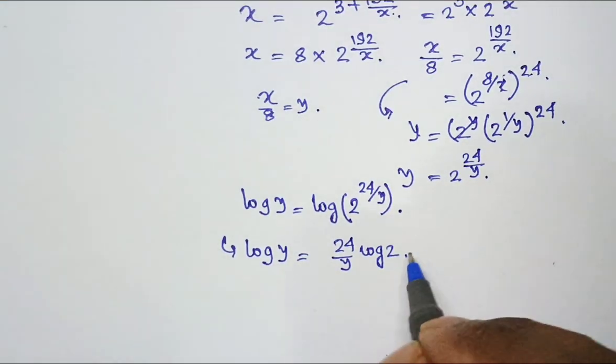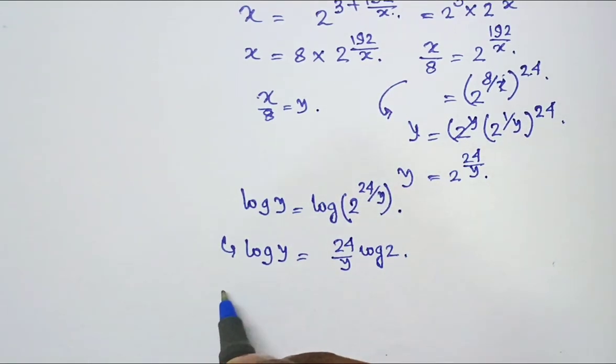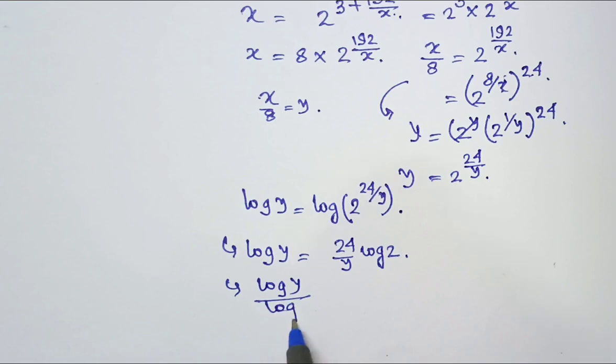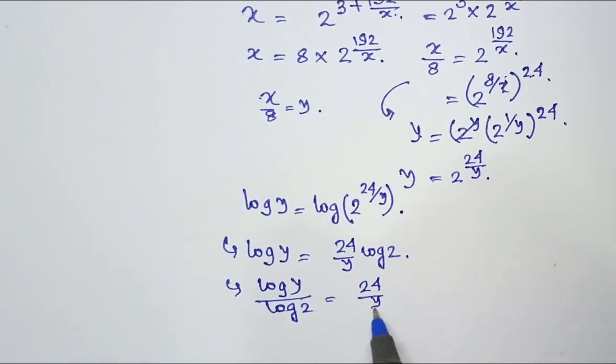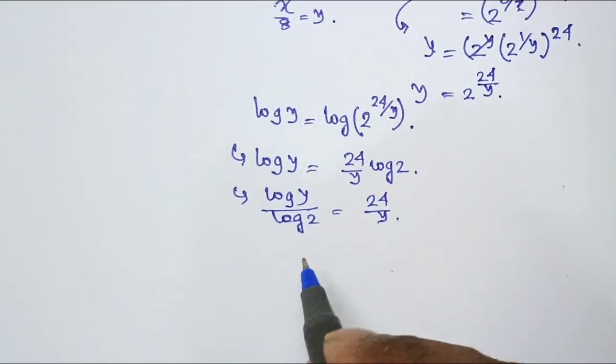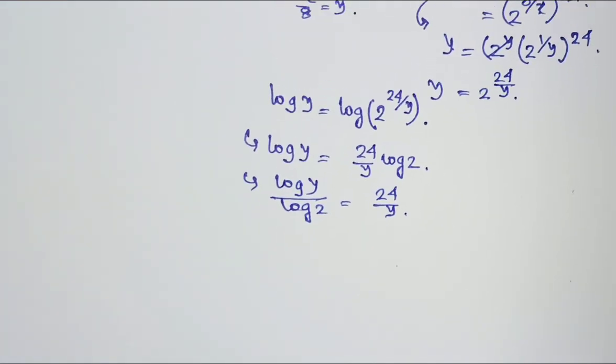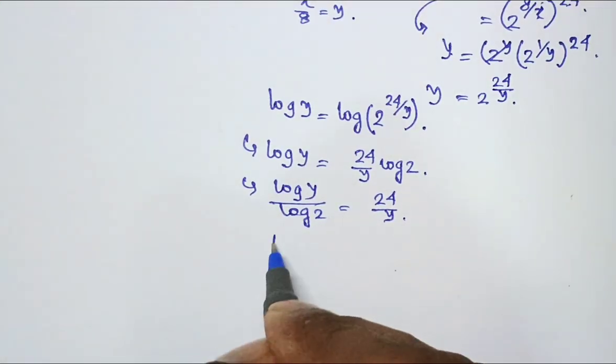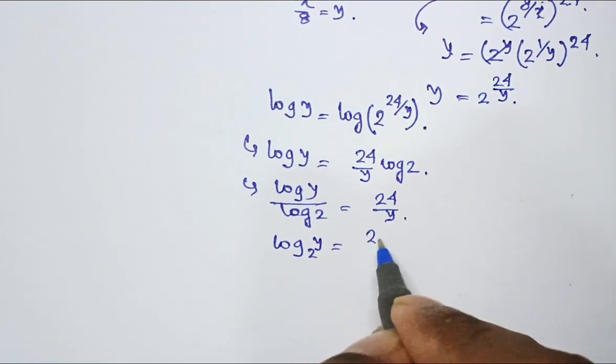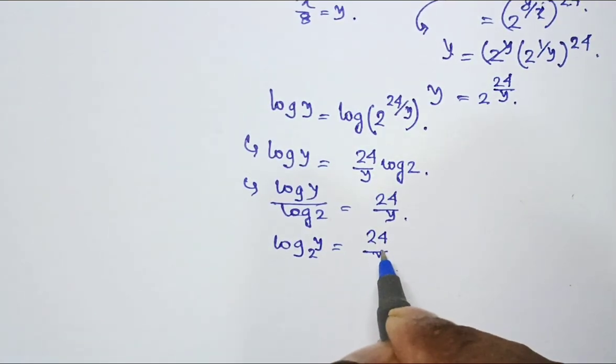Taking log 2 in the left side then my expression is log y by log 2 is 24 by y. What is log y by log 2? Log y base 2. So my expression becomes log y base 2 equal to 24 by y.